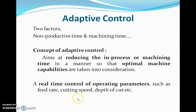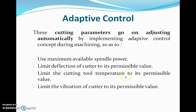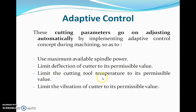The parameters under adaptive control are feed rate, cutting speed, depth of cut, etc. When we apply adaptive control, cutting parameters go on adjusting automatically during machining, so that we can maximize the available spindle power, limit deflection of the cutter to its permissible value, limit the cutting tool temperature to its permissible value, and limit the vibrations of the cutter to its permissible value.